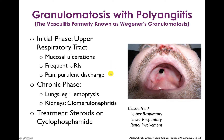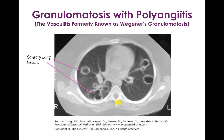The chronic phase of granulomatosis with polyangiitis classically involves the lungs and kidneys. You can have hemoptysis, and kidney manifestations usually include glomerulonephritis. Treatment is steroids or cyclophosphamide. Shown here are cavitary lung lesions from a patient with granulomatosis with polyangiitis.